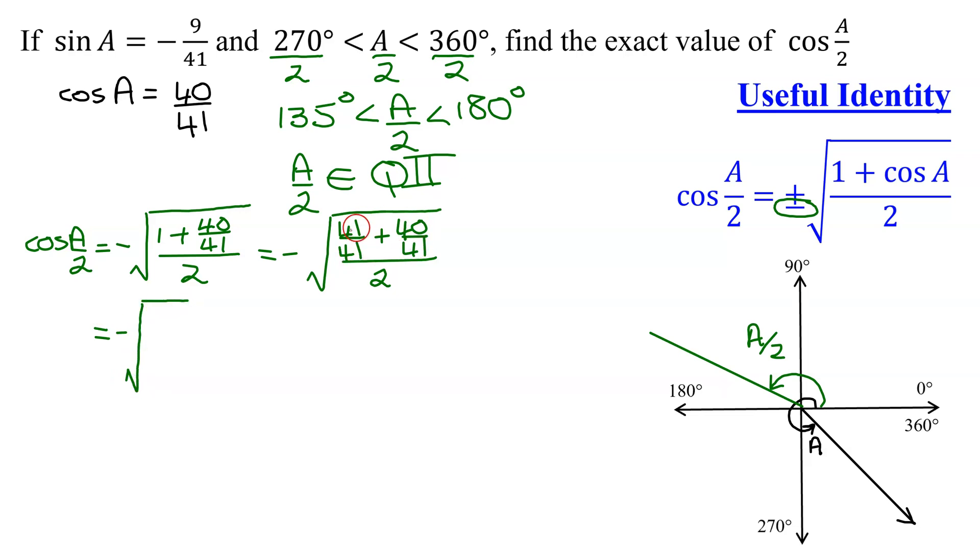That equals the negative square root of, common denominator, add the numerator, 41 plus 40 is 81, divided by 2. I want 2 as a fraction, so turn it into a fraction by dividing it by 1. So I get negative the square root of, when you divide fractions, you take the fraction in the numerator, 81 over 41, and multiply it by the reciprocal of the fraction in the denominator, the reciprocal of 2 over 1 is 1 half.